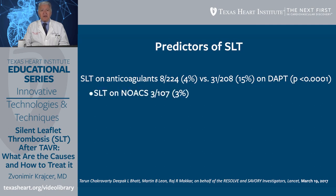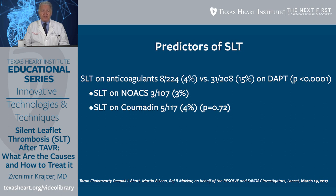Interestingly, in this study, silent leaflet thrombosis on newer anticoagulants (NOACs) was low at 3%, while silent leaflet thrombosis on Coumadin was 4%.